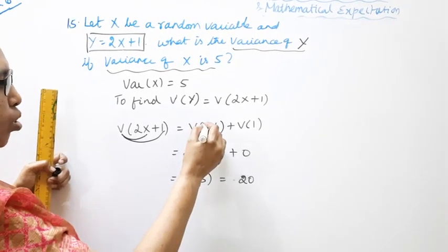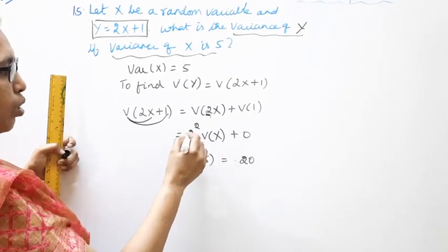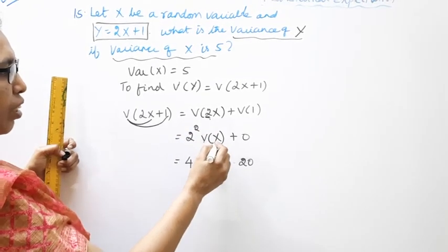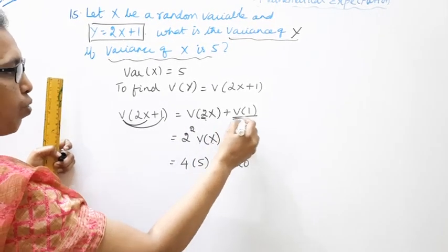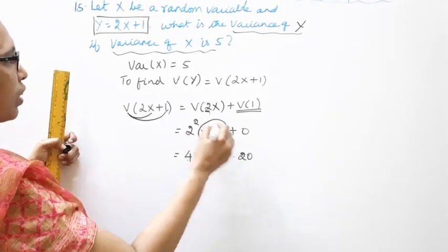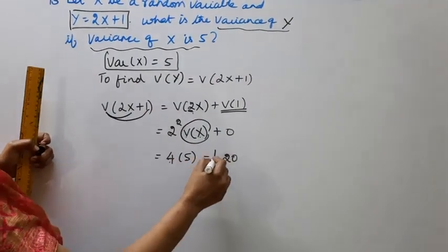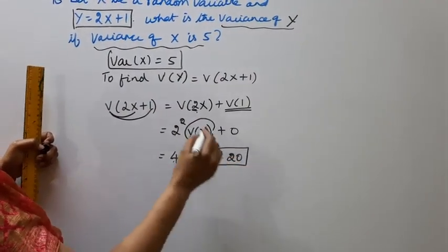The 2 in front becomes 2 square variance of x. Variance of 1 is equal to 0. 2 square is 4. Variance of x is 5. 4 into 5 is equal to 20.